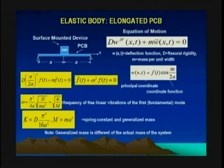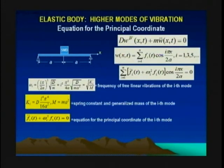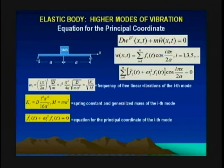The only difference is that in the equation — f-double-dot plus omega-squared times f as a function of t — the f's will have a subscript i. The solution and results will be similar. The only difference is that the natural frequencies will increase with the number of the mode of vibration squared. That means the frequency of the third mode of vibration will be nine times higher than the first mode; the fifth mode will be 25 times higher, and so on.